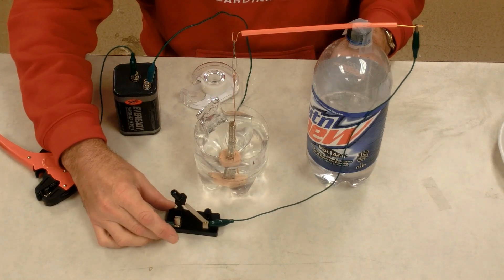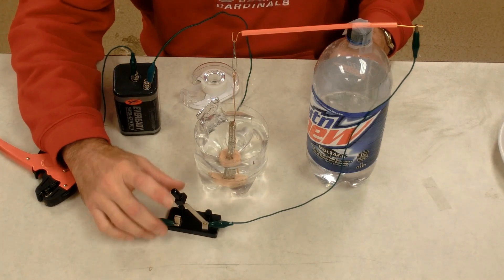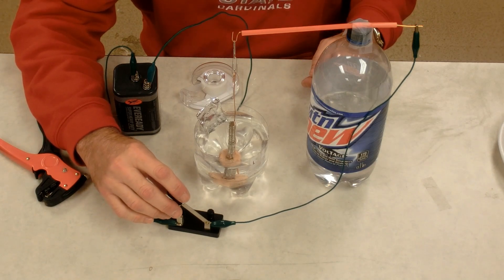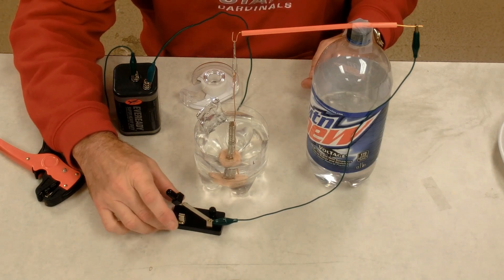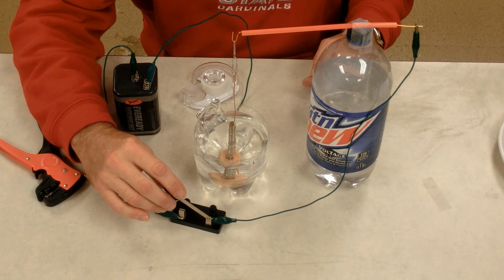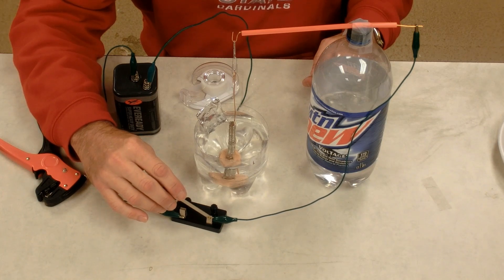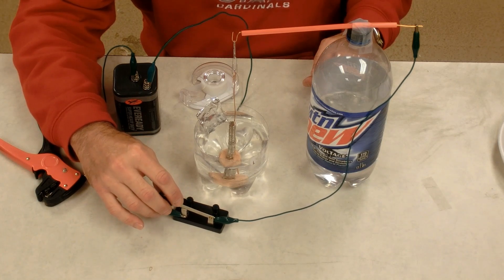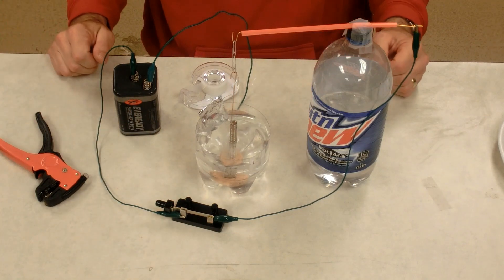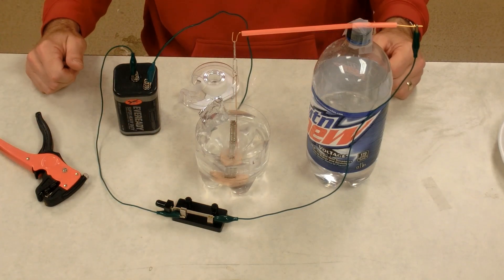Whenever I close the switch, if all goes well, the copper wire will start circling the stack of magnets. This usually works the first time about 75% of the time. So we'll see if I have to do any adjusting. Now I will close the switch, and it's working. I'm getting movement. Success on the first try.